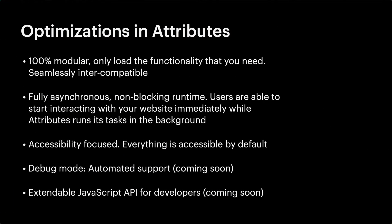Let's go through the list of optimizations and improvements we've made in Attributes. First, it's 100% modular — only load the functionality that you actually need. Each solution is seamlessly intercompatible. It's fully asynchronous with non-blocking runtime. Users are now able to start interacting with your website immediately while Attributes runs its tasks in the background. And this right here fixes so many of your problems with CMS library. It's accessibility-focused — everything is accessible by default in Attributes. And coming soon, we have debug mode for automated support, and also coming soon, an extendable JavaScript API for developers.